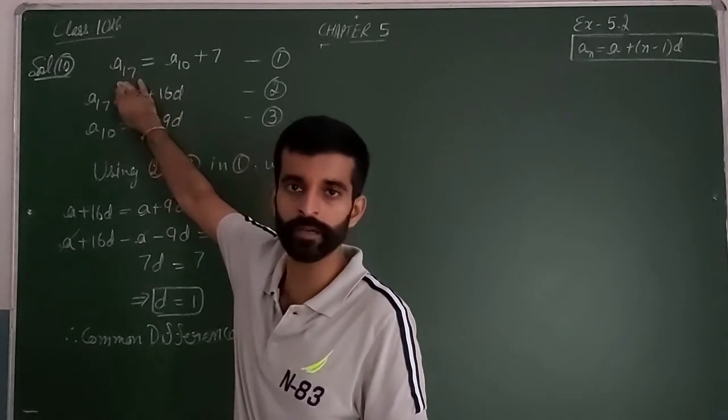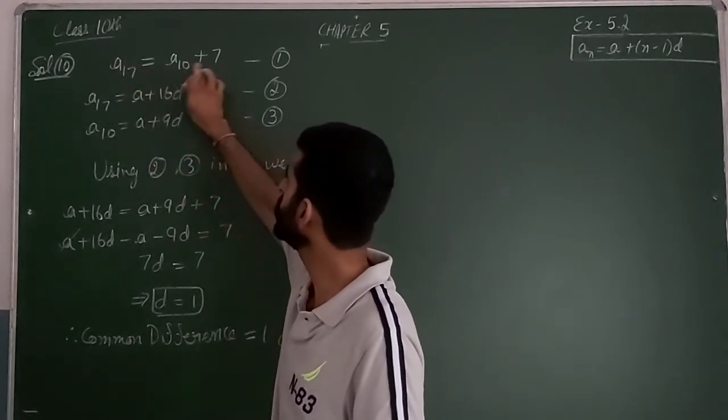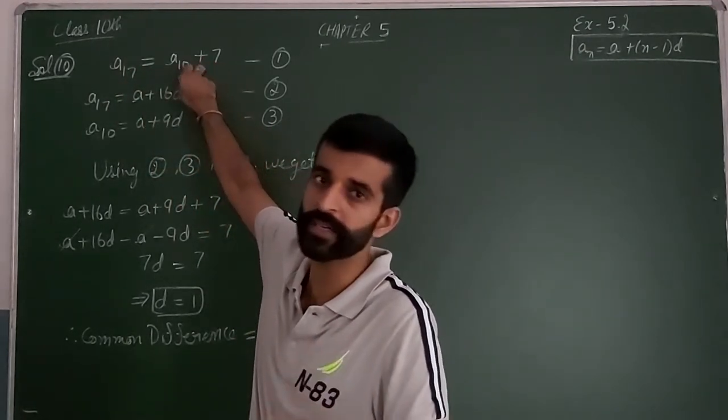So, you write that the 17th term, A17, is equal to 7 more, means 7 plus the 10th term.